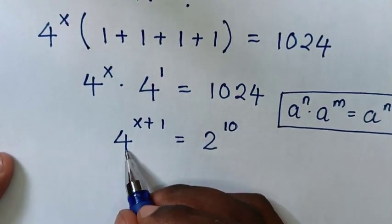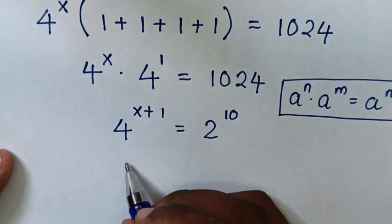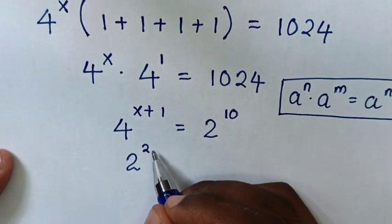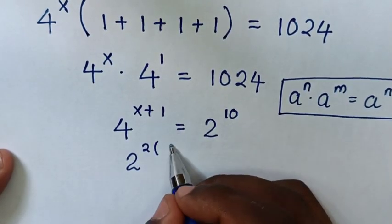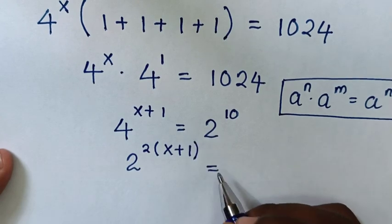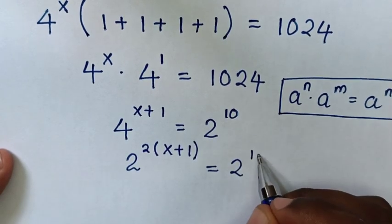Then for this 4, the base of 2 is same as 2 power 2. Then bracket power of x plus 1 is equal to 2 power 10.